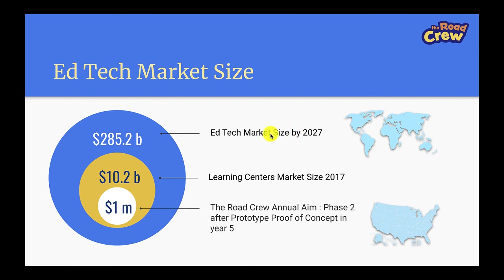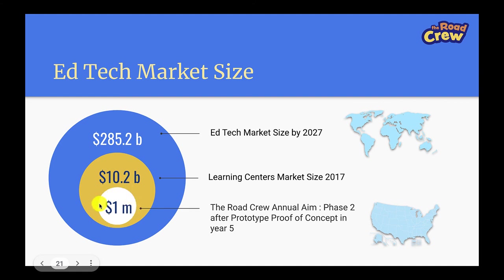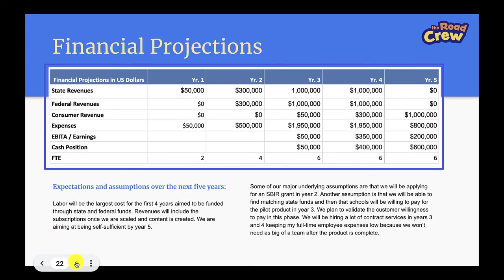The Road Crew annual aim in phase two — after prototype proof of concept in five years — is a $1 million revenue stream. Five years is something that investors and grant agencies really want to look at. Then we have financial projections: state revenues, federal revenues, consumer revenues — it starts to grow towards the end of the five years, because in the beginning we're dependent on state and federal funding. These are all things I needed to have written out for the Michigan Accelerator Fund.